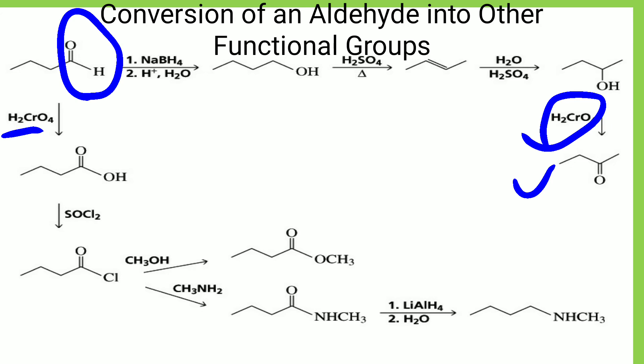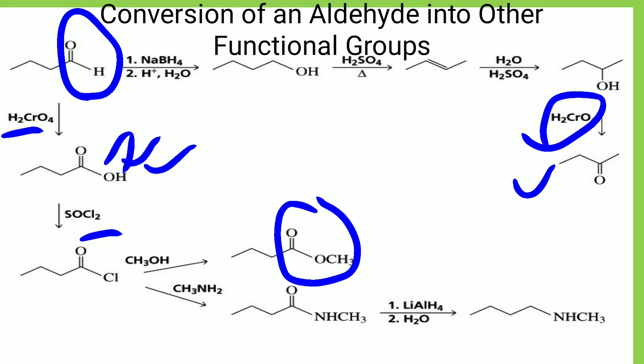The aldehyde can also react with H2CrO4 to give an acid. This acid reacted with SOCl2 removes the OH and attaches Cl to form an acyl chloride. The acyl chloride reacted with methanol (CH3OH) gives an ester, and with methylamine (CH3NH2) gives an amide. This amide on reduction with LiAlH4 in the presence of water reduces the carbonyl group — the C=O is converted to CH2 — giving the reduced product.